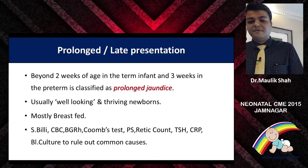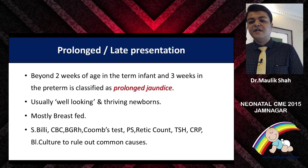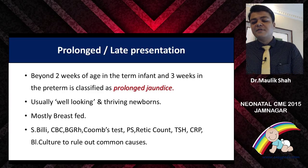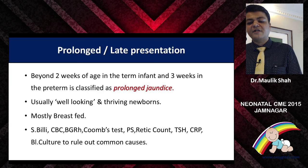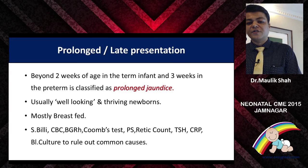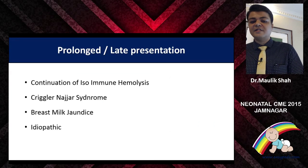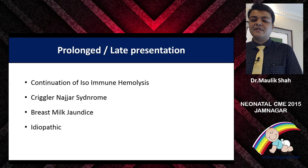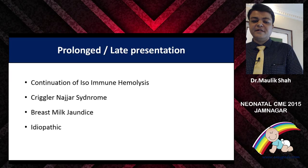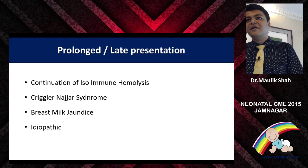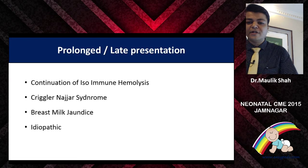Prolonged or late presentation of jaundice is when a baby presents beyond 2 weeks of age in a term infant and 3 weeks in a preterm infant. Usually these babies are well-looking, thriving newborns, mostly breastfed, and we run plenty of laboratory tests to rule out common causes. The common causes include continuation of isoimmunolysis like RH or ABO, Crigler-Najjar syndrome, breast milk jaundice, and many times it is idiopathic.